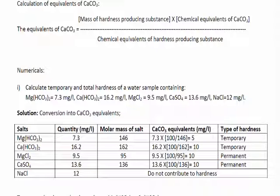Then differentiate the given salts into two types based on their CaCO3 equivalence — temporary and permanent. Bicarbonates and carbonates of calcium and magnesium produce temporary or alkaline hardness, while chlorides, nitrates, and sulfates of calcium and magnesium produce permanent or non-alkaline hardness.